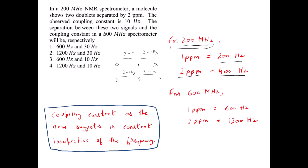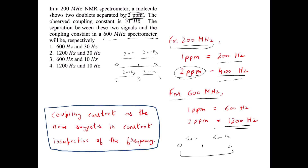They ask for the separation and the coupling constant on a 600 MHz spectrometer. The ppm value remains the same regardless of the instrument — whether 600 MHz or 1200 MHz, the gap remains 2 ppm. Only the value in Hz changes. On a 600 MHz instrument, 0 to 1 ppm is 600 Hz and 1 to 2 ppm is another 600 Hz, so the gap between 2 ppm signals becomes 1200 Hz.